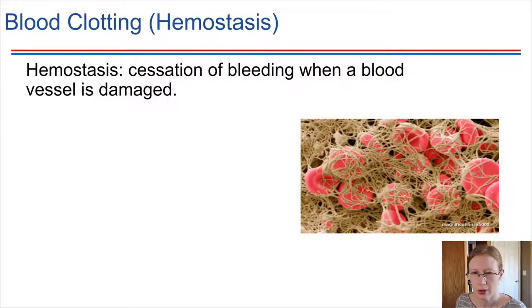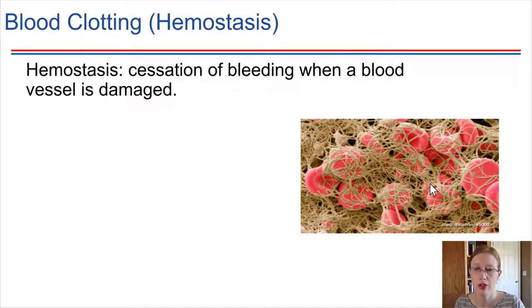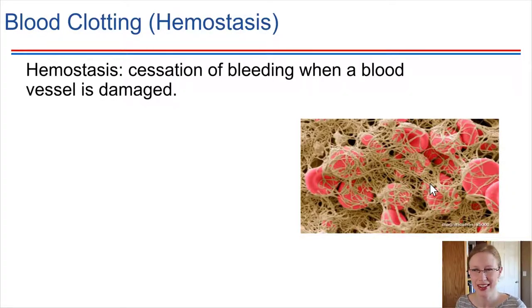Now let's talk about blood clotting. Hemostasis is the ability of the body to stop bleeding when damage happens to a blood vessel. So hemostasis is just the word referring to blood clotting taking place. This is a picture of a blood clot, which ends up producing a network of fibrous fibers, and there are four major steps involved in this taking place.